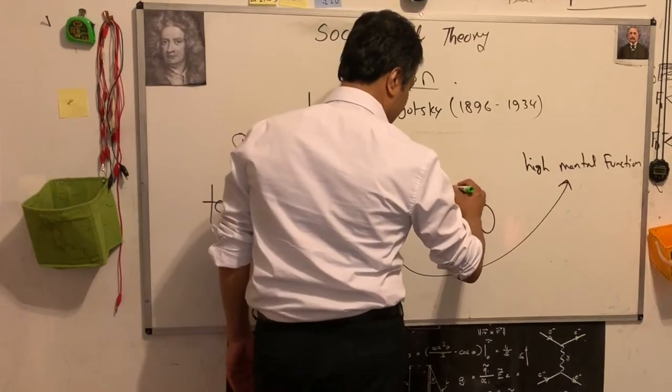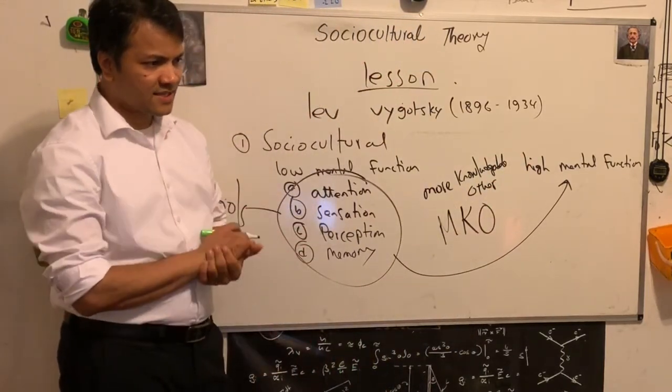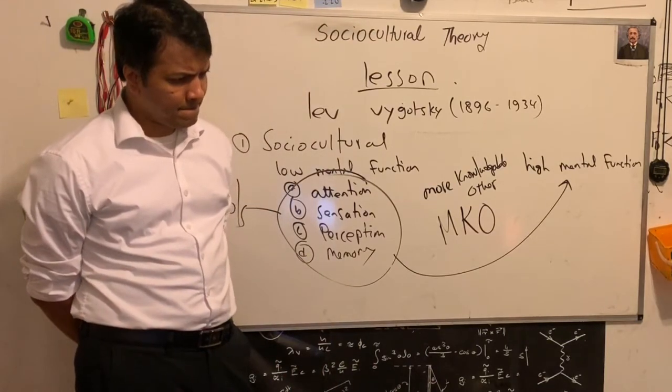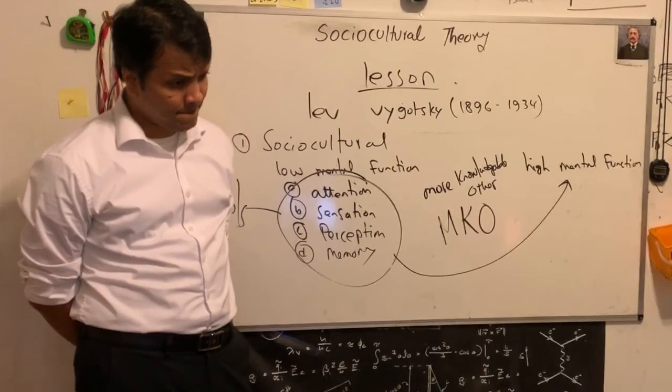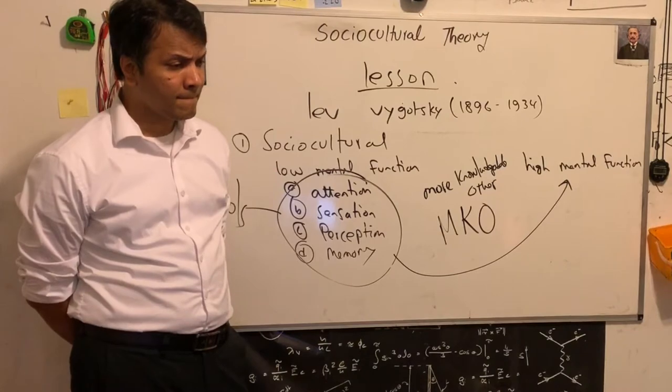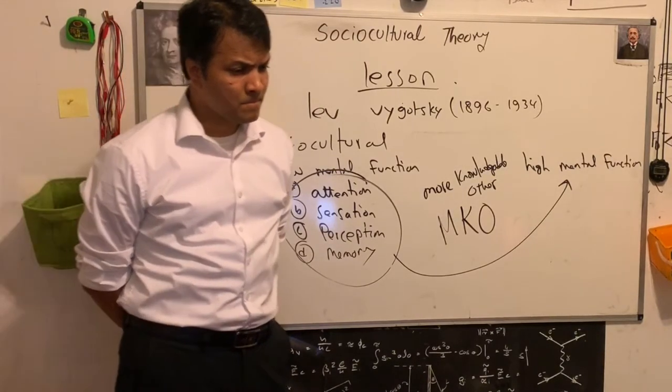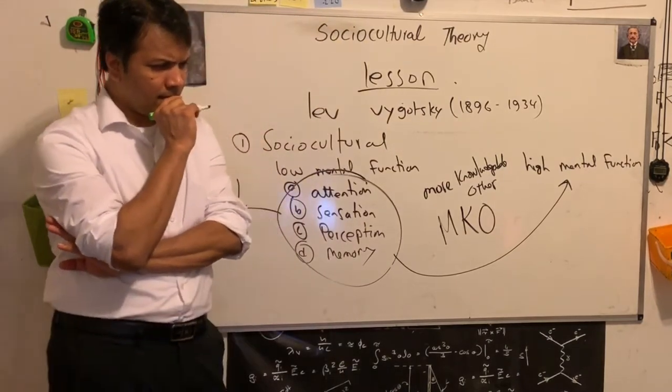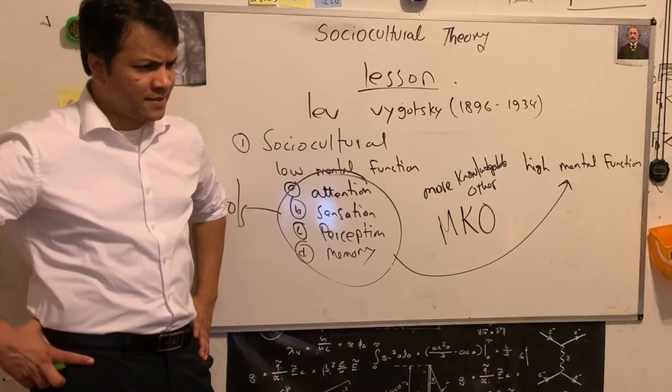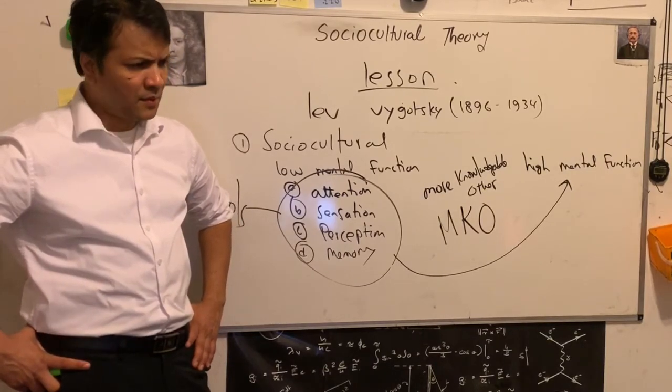They can reach high mental function through more knowledgeable others. Let me give you an example. A parent—it's like a child's low mental function and high mental function. Let's say the low mental function is the first floor of the piety building, and the high mental function is the last floor. It's almost impossible for the child to walk up all those stairs to the last door. They need the elevator—the scaffolding from more knowledgeable others.